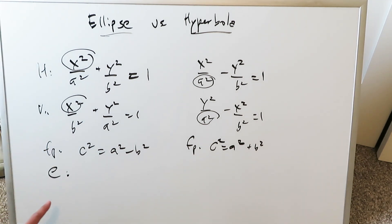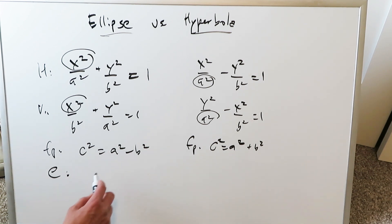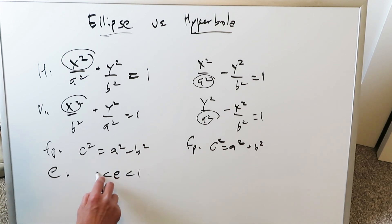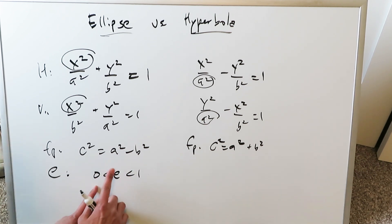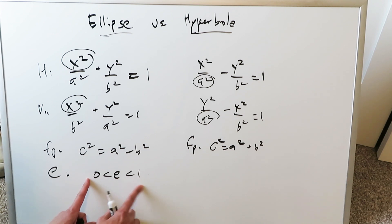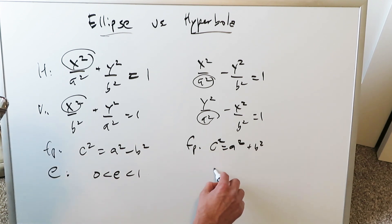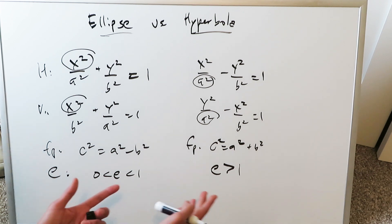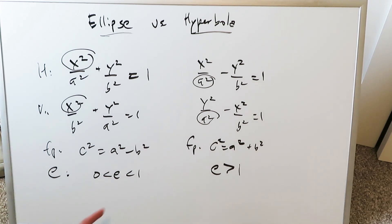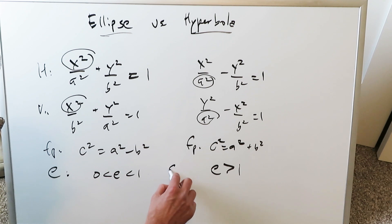Another important difference is with regards to eccentricity — you know, c over a. The eccentricity for an ellipse is always a value less than 1 but larger than 0 — a fractional value in between, not equal to either. For the hyperbola, the eccentricity is always larger than 1; it cannot be equal to 1, it has to be larger than 1. In both instances the eccentricity is always equal to c over a.